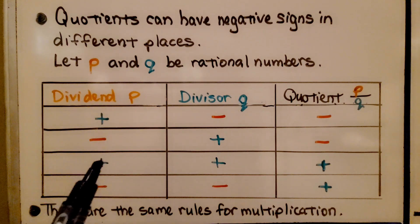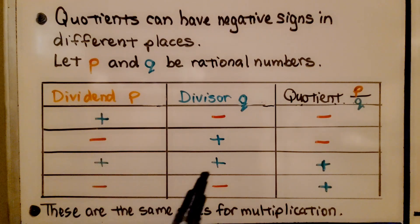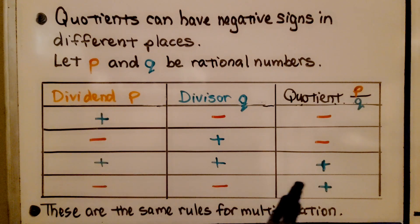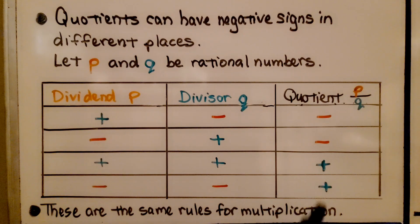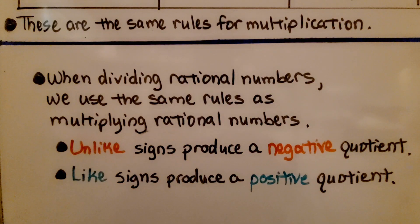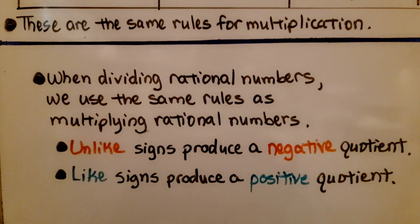When we have like signs — when the dividend and divisor are both positive, the quotient is going to be positive, and when they're both negative, it's also going to be positive. These are the same rules for multiplication. When dividing rational numbers, unlike signs produce a negative quotient, and like signs produce a positive quotient.